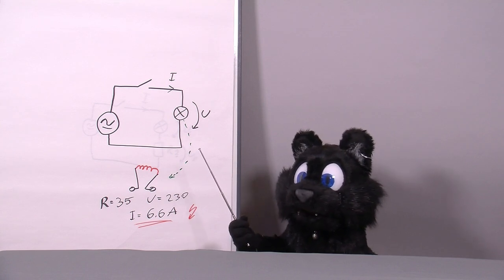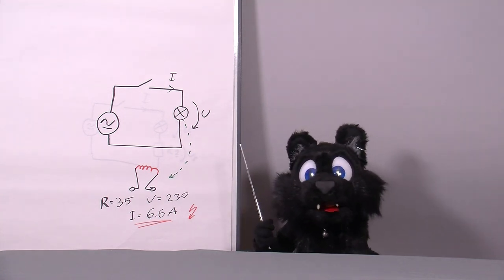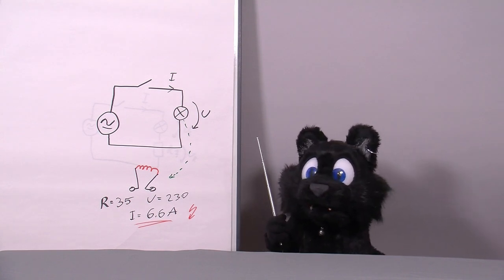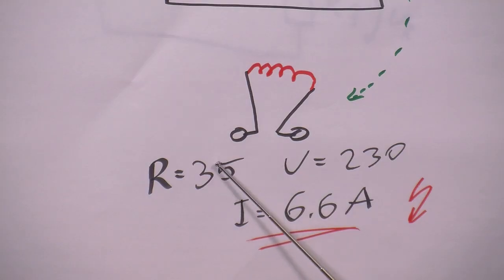Now, if you say wait a minute, that's just a short circuit, you'd be very much correct! The resistance of a filament is, in fact, rather low. Only 35 ohms for my 100 watt bulb.